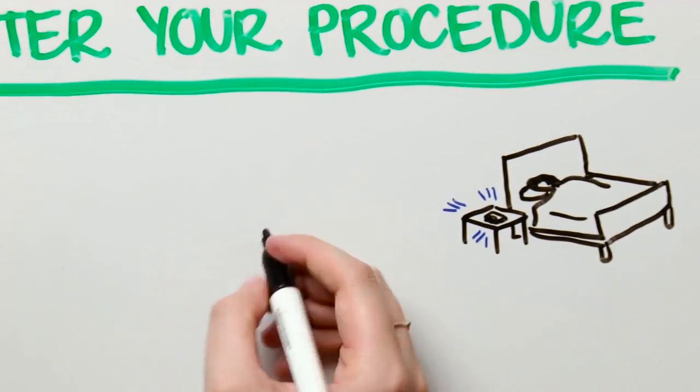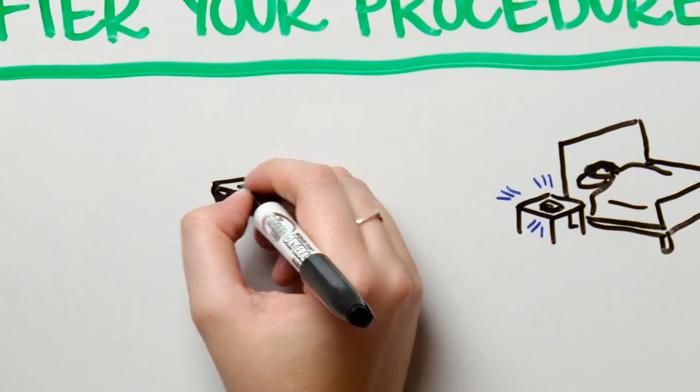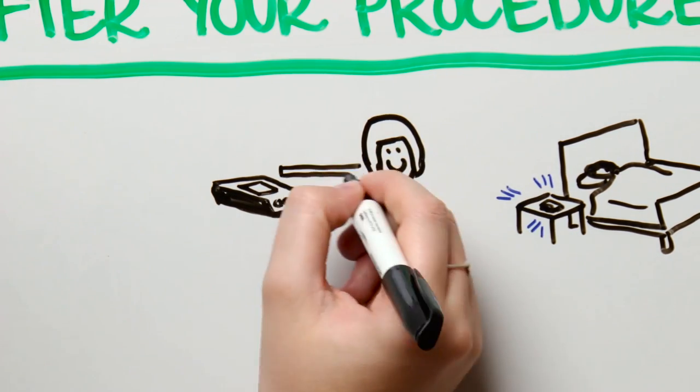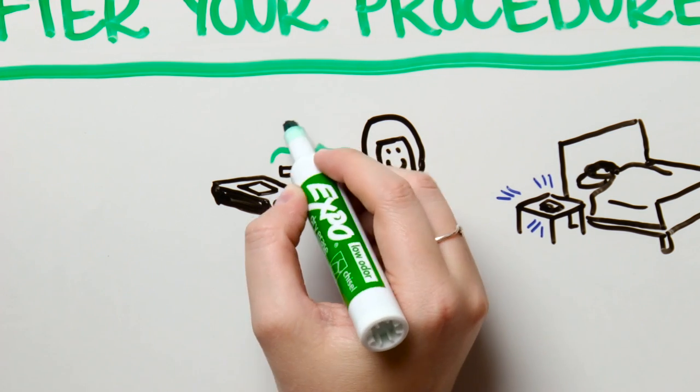The monitor must be within three feet of you at all times. If it's too far from you, it will beep and the signal will become weak. If this should happen, just hold it up to your chest to re-establish connection.